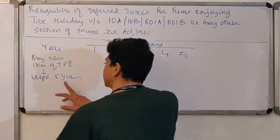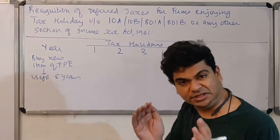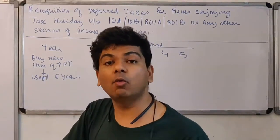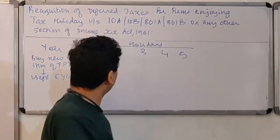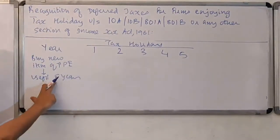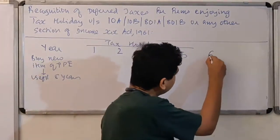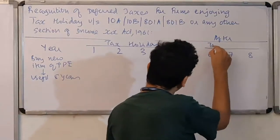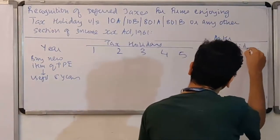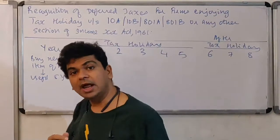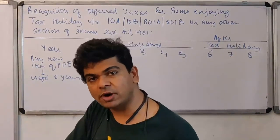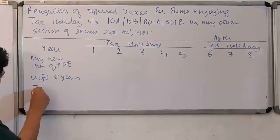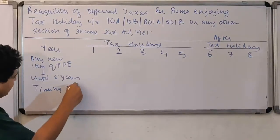We know this is nothing but a timing difference — the total depreciation for accounts and total depreciation in tax is going to remain the same. I will calculate the timing differences: 5 years of tax holiday, but the useful life is 8 years, so I introduce years 6, 7, and 8. This is the period after the tax holiday. Because the amount of depreciation will be different for accounts and tax, it will result in a timing difference. So I will work out the timing difference.